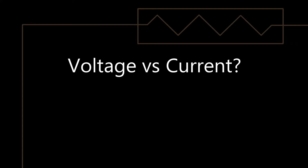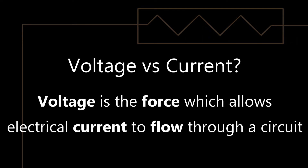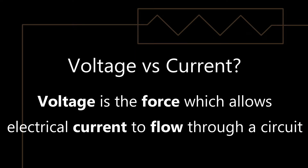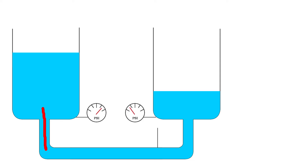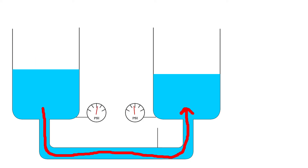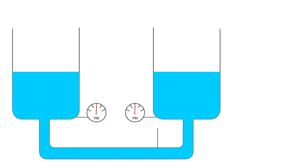To summarise the difference between voltage and current: voltage is the force which allows electrical current to flow through a circuit, just like pressure is the force which pushes water through a pipe. You can't get any current flow if you don't first have voltage, just like you can't get water flow unless there's a difference in pressure between one end of the pipe and the other.